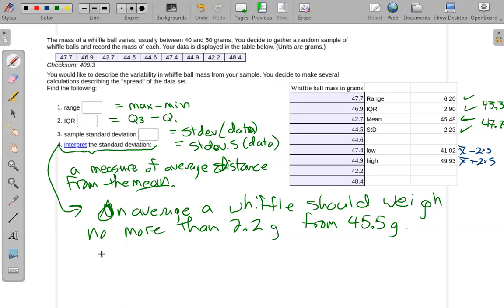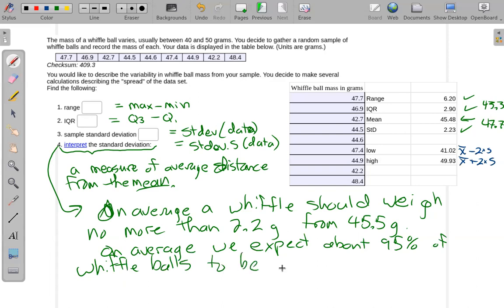So I could write something like, on average, we expect about 95% of wiffle balls to be between, say, 41 grams and about 50 grams.